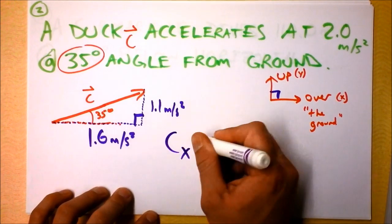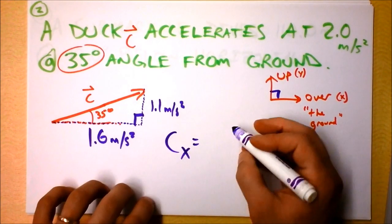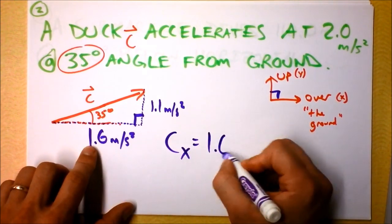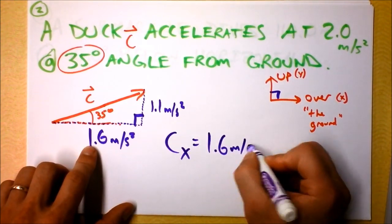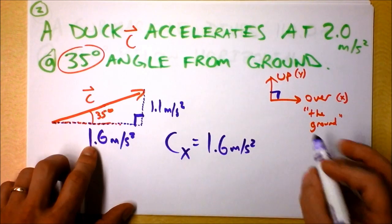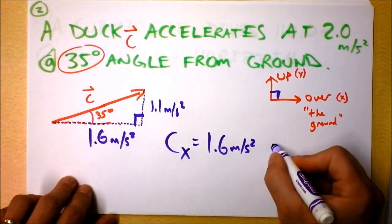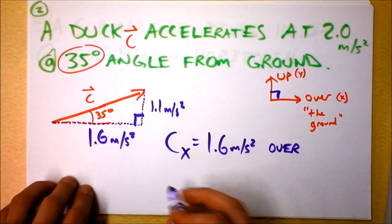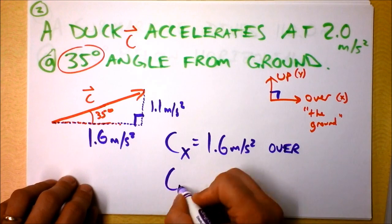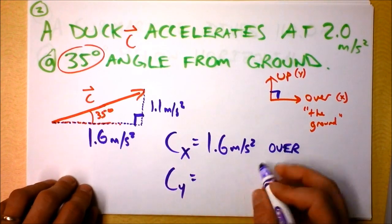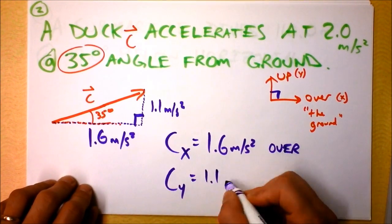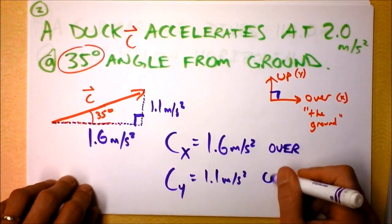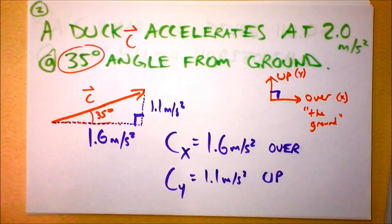To summarize: C sub x equals 1.6 meters per second squared in the 'over' direction (to the right), and C sub y equals 1.1 meters per second squared upward.